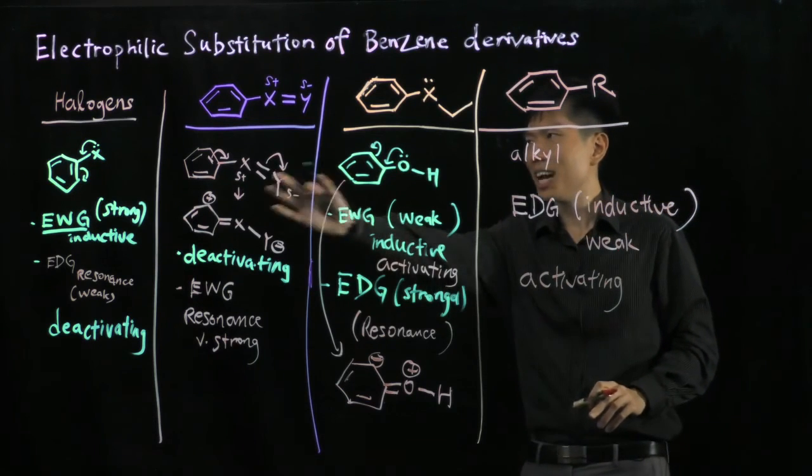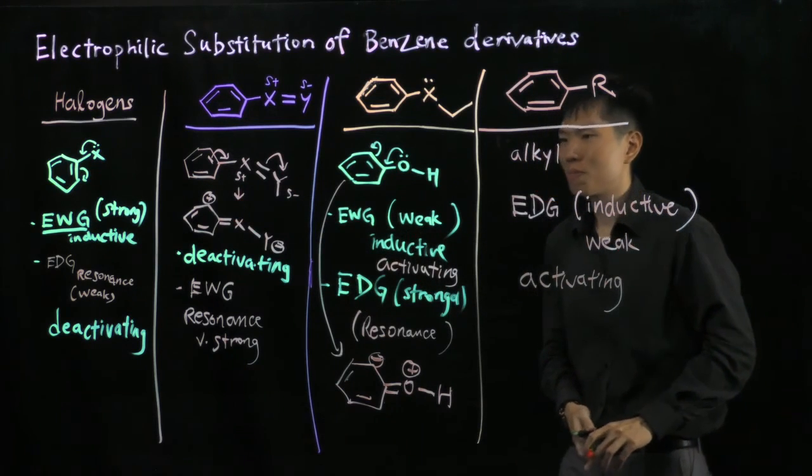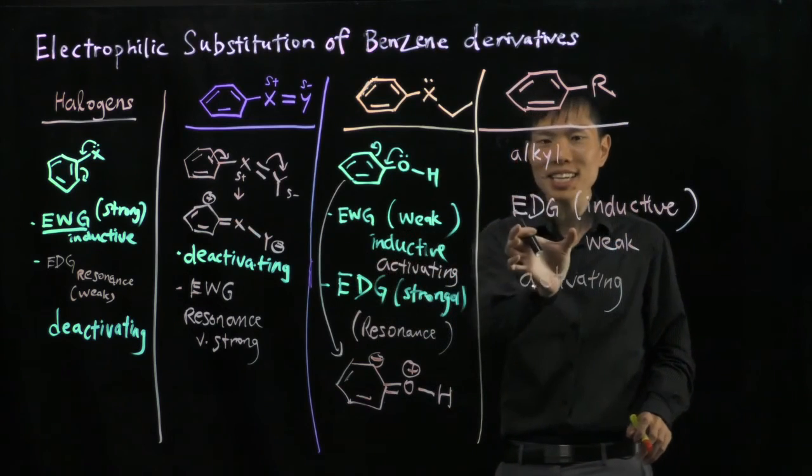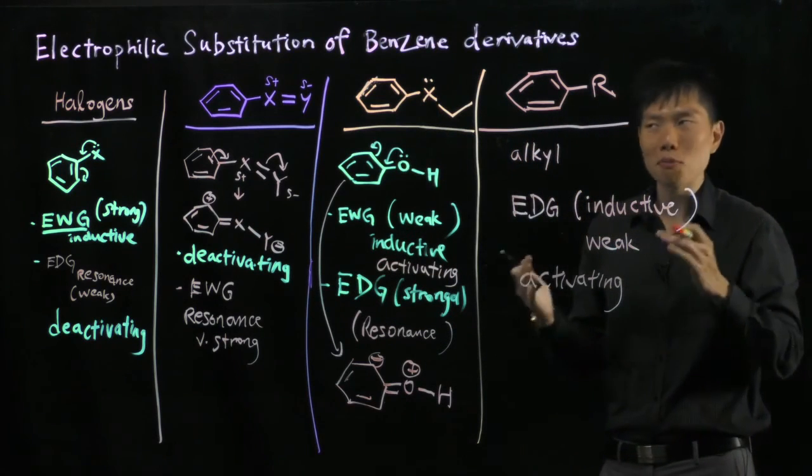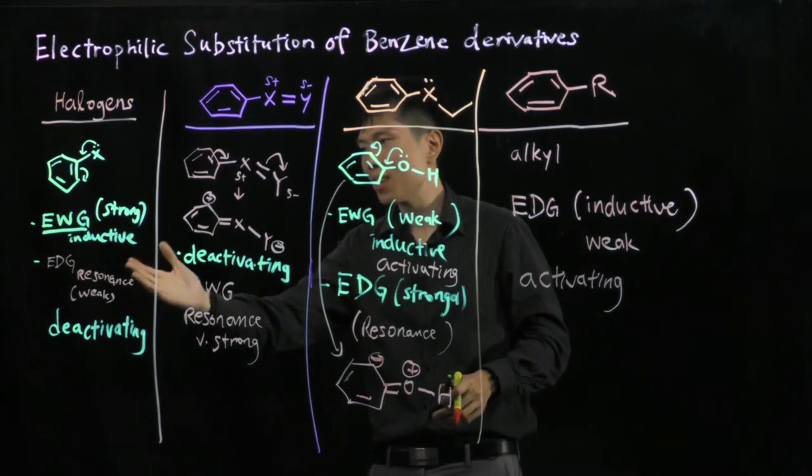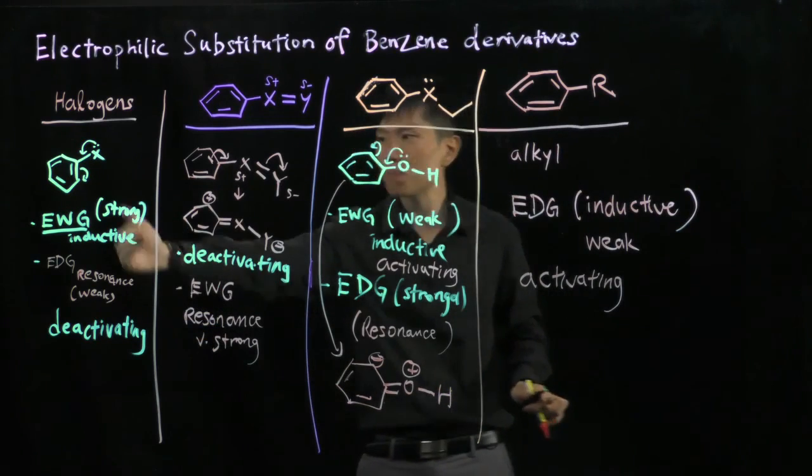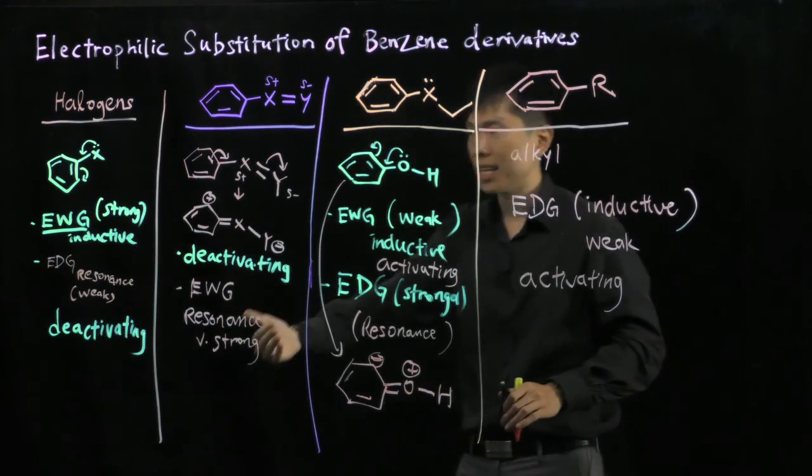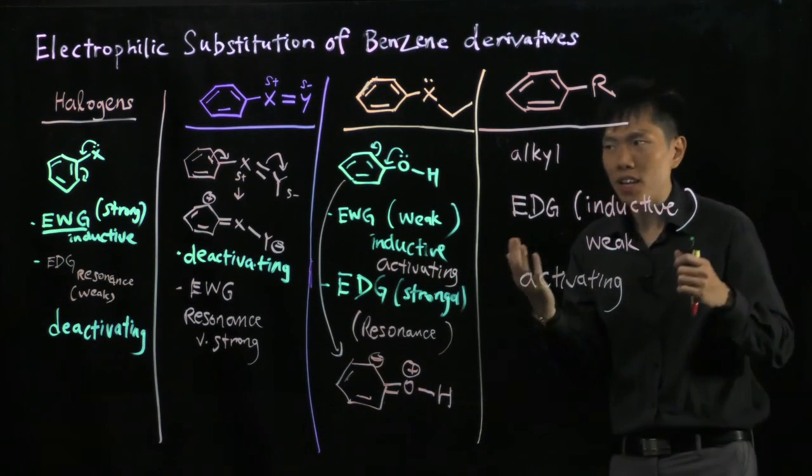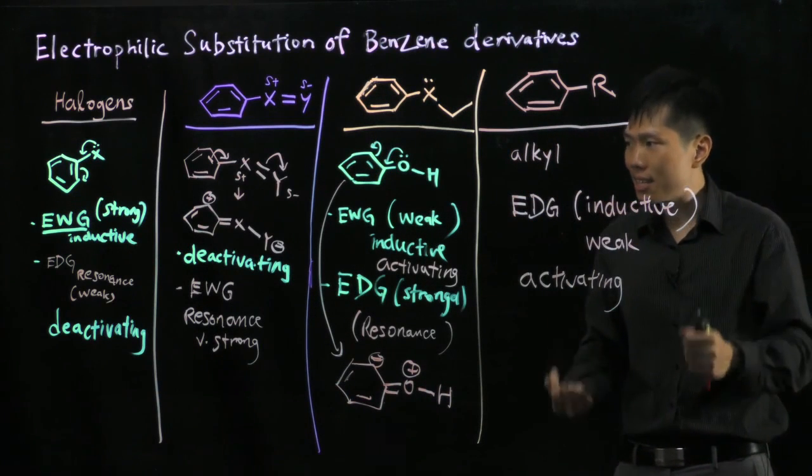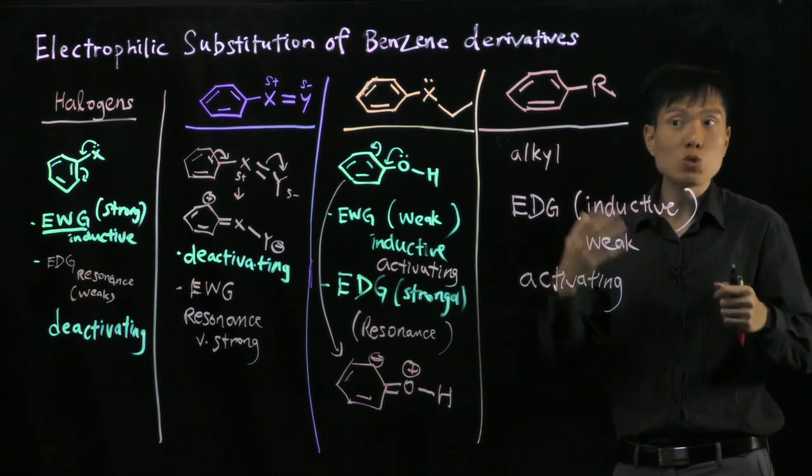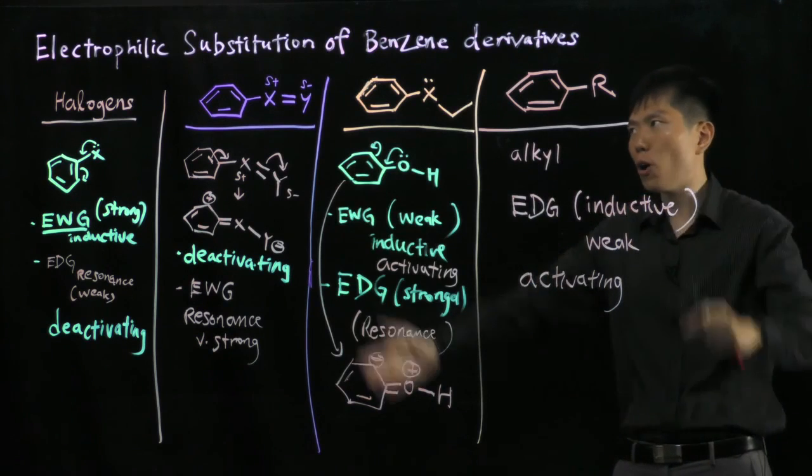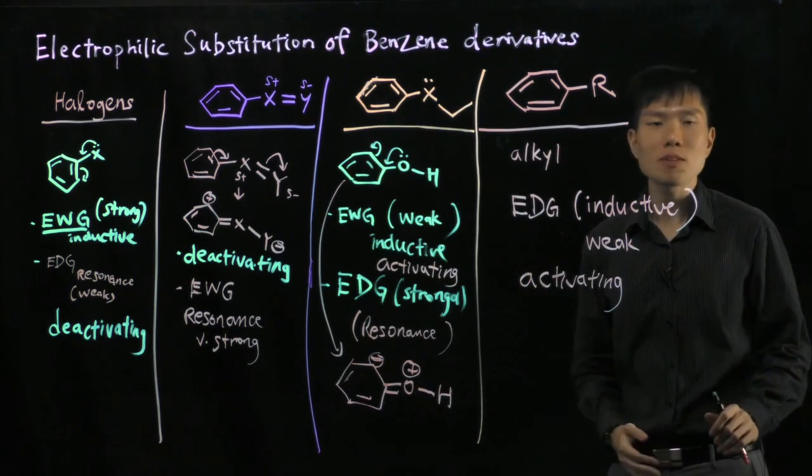So you see now that for those that are activating, who they are and why they are, and those that are deactivating, why is it so. Even though there's both electron withdrawing and electron donating groups, we have to understand the inductive and resonance effect, why is it strong and weak, and conclude overall on the electrophilic substitution of the benzene derivative.